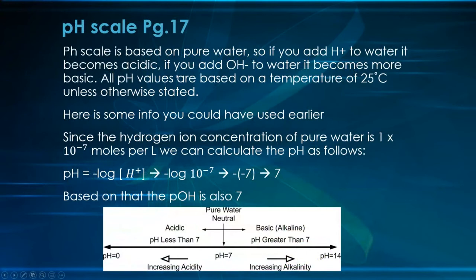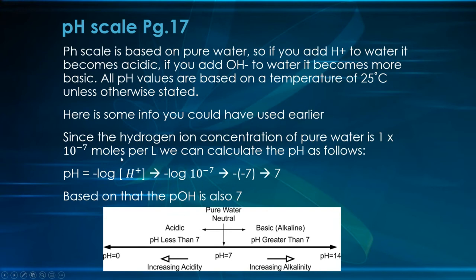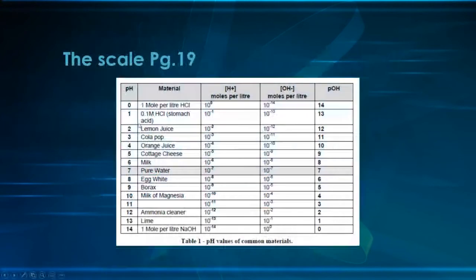The pH scale is based on pure water. Adding more hydronium makes it acidic; adding more hydroxide makes it more basic. All pH values are based on a temperature of 25°C unless otherwise stated — that's important to remember. Here's the pH scale again with common examples of acidic and basic solutions.